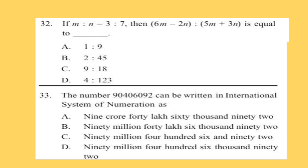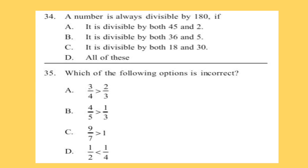Question 33: The number 904060092 can be written in the international system of numeration as — look at the options. Question 34: A number is always divisible by 180 if — Question 35: Which of the following options is incorrect? Look at the options and select your answer.